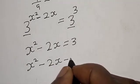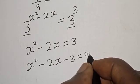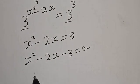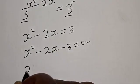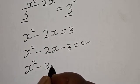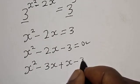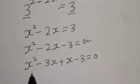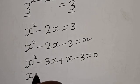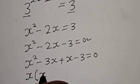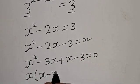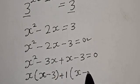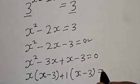So s squared minus 2s minus 3 equals 0. This is a quadratic equation — let's solve it using the factorization method. We write s squared minus 3s plus s minus 3 equals 0. Factoring s from the first two terms gives s times (s minus 3), and factoring 1 from the last two terms gives 1 times (s minus 3), equal to 0.